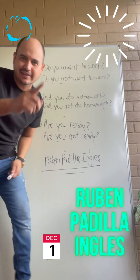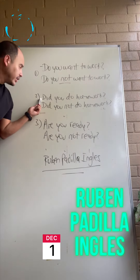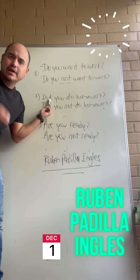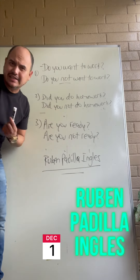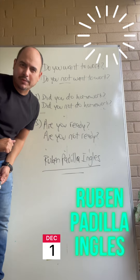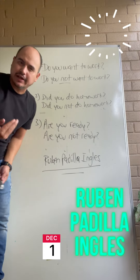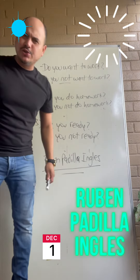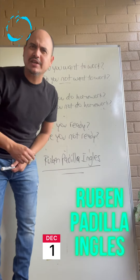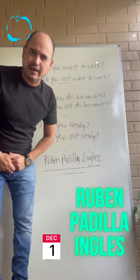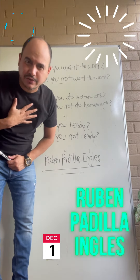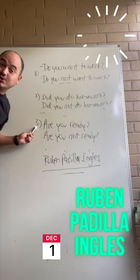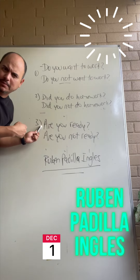Let's see example number two — question in the simple past tense, en el pasado simple. Did you do homework? Hiciste tarea? Ahora, cómo preguntarías 'no hiciste tarea'? Did you not do homework? Cómo sería 'no hiciste lo que te dije'? Did you not do what I told you to do?